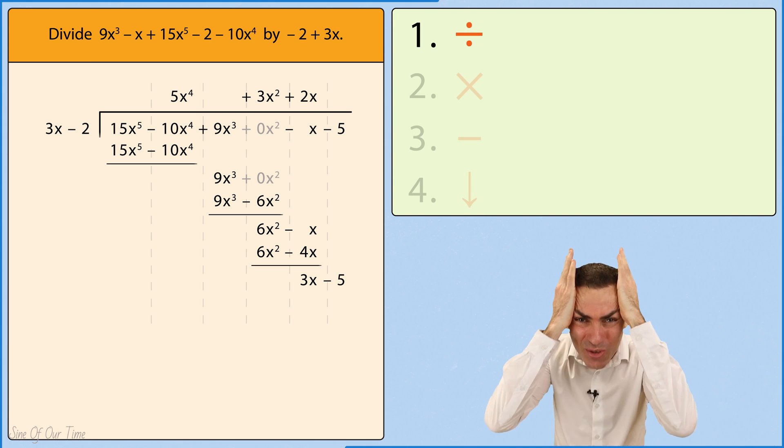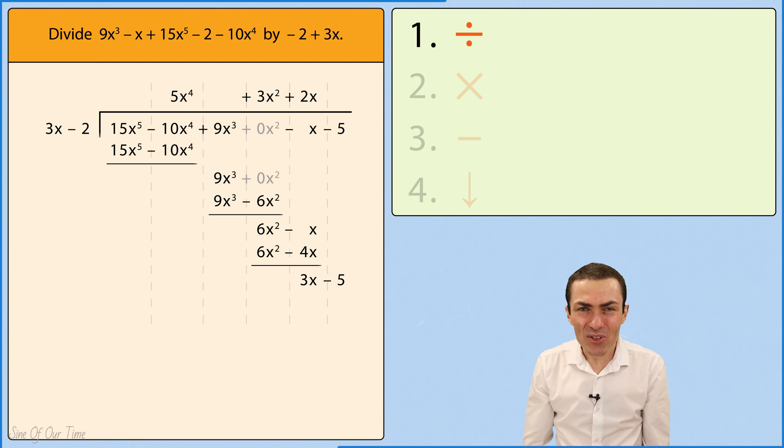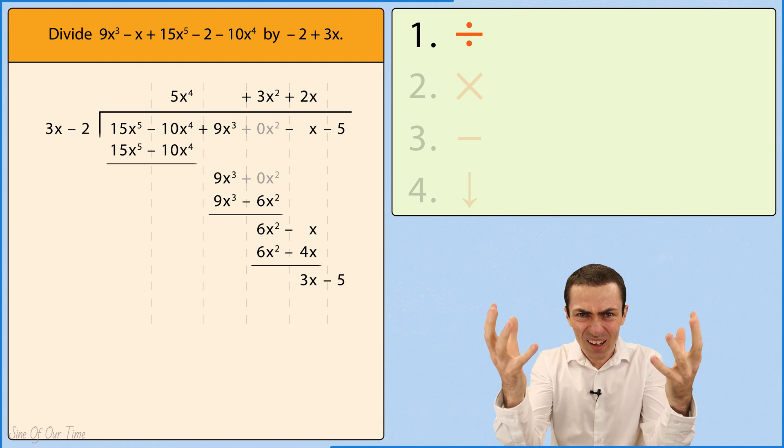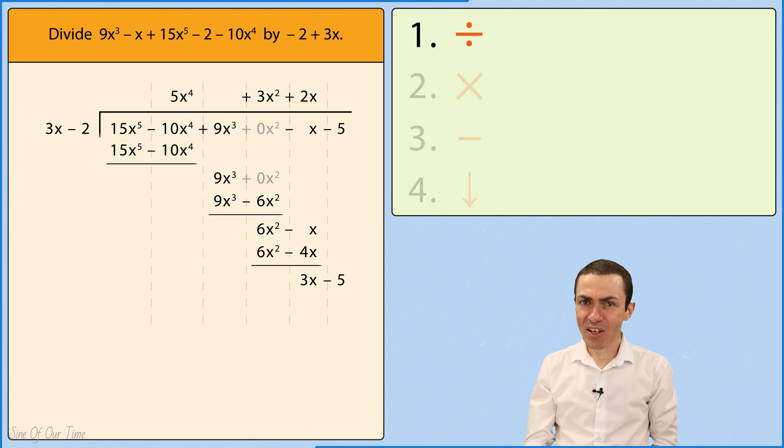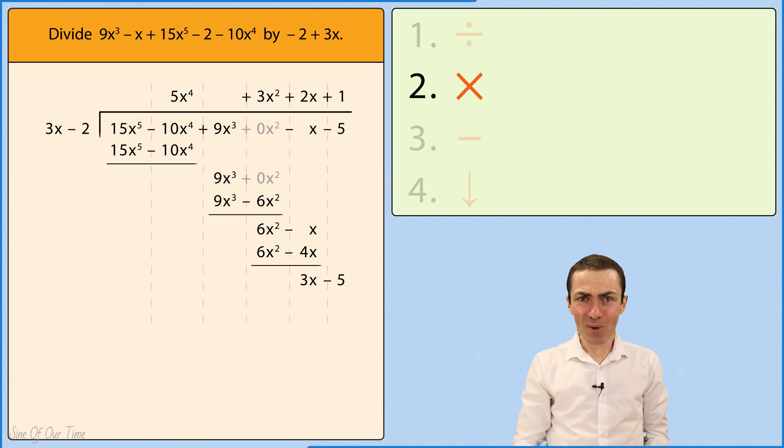If cycling through the steps three times wasn't enough, we have to do it again. 3x divided by 3x gives us 1. 1 multiplied by 3x minus 2 gives us 3x minus 2.